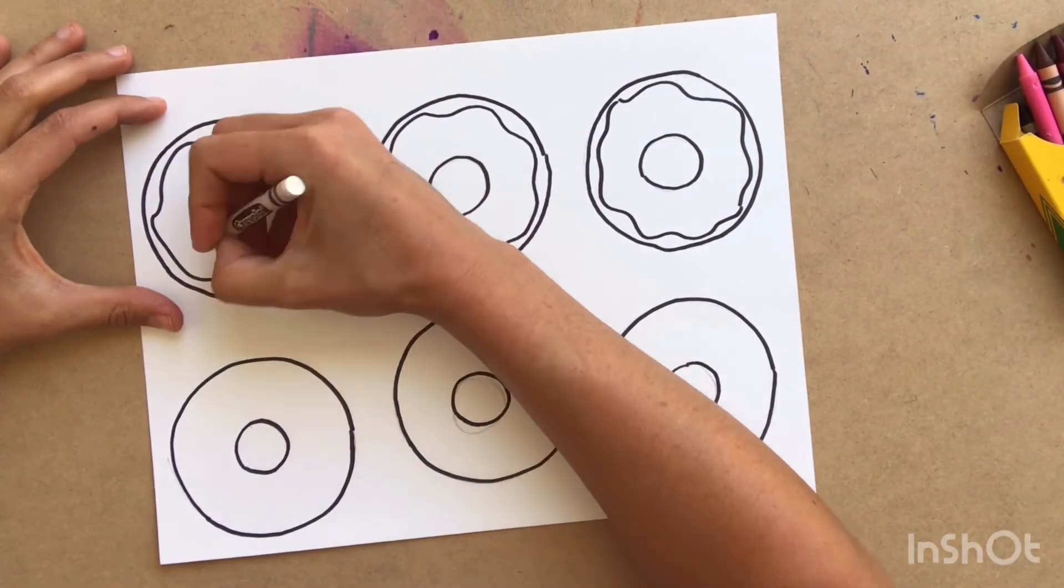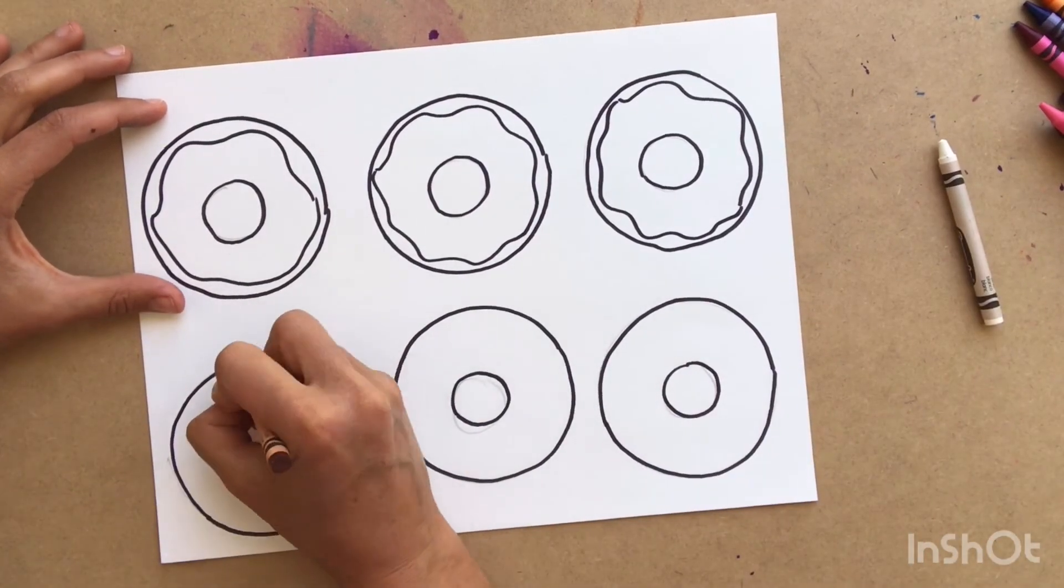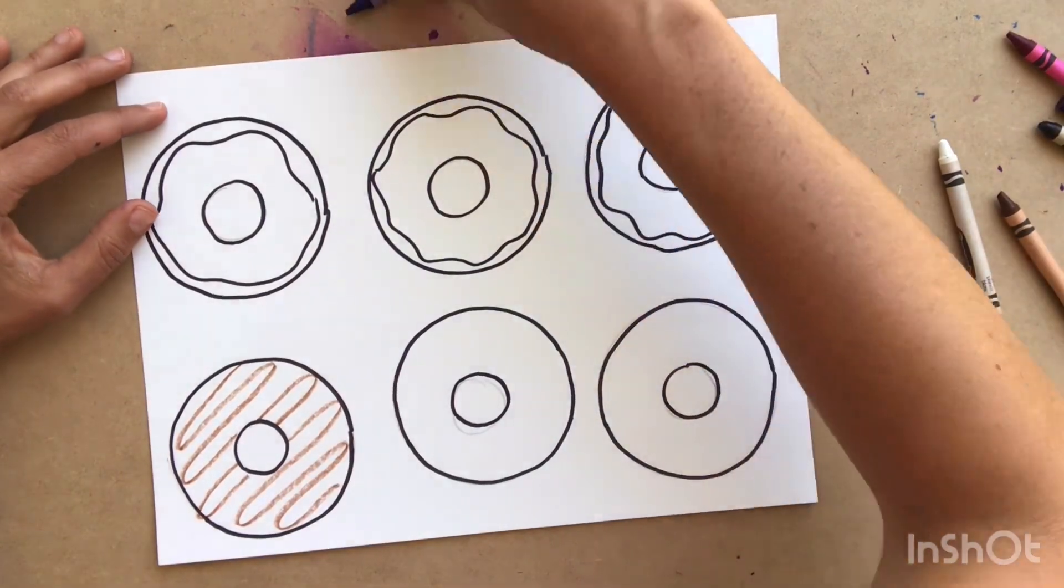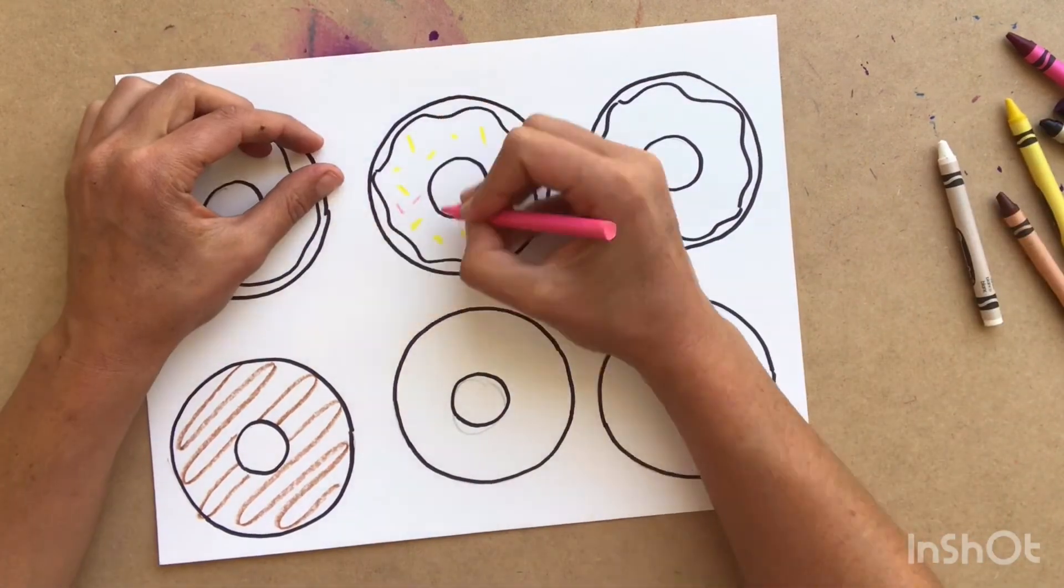Now it's time to go in with our crayons and add the details. You can add details like sprinkles, or you can add details like jelly, or even icing. You can use a variety of colors as well.